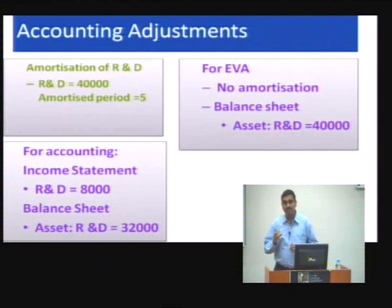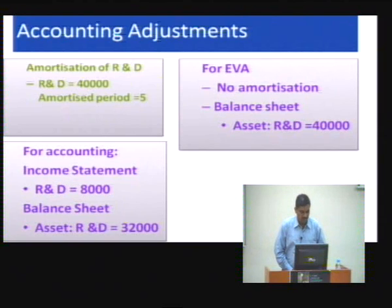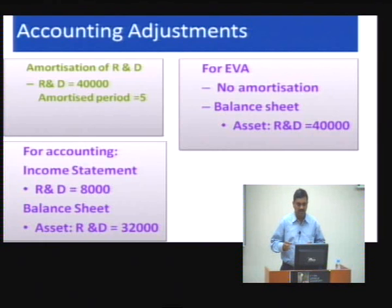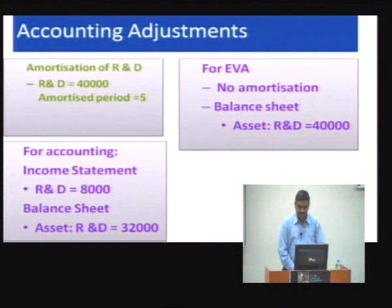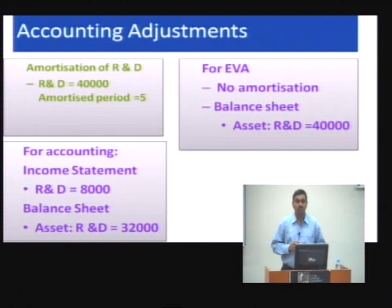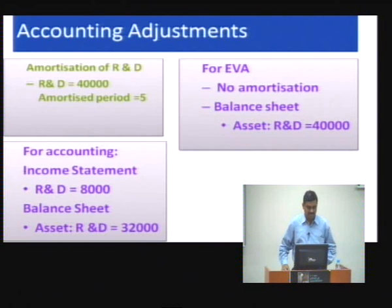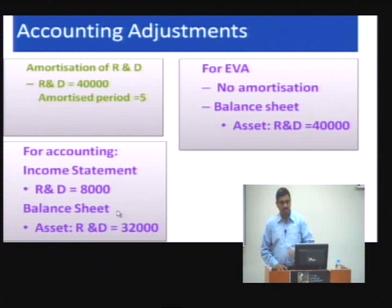Now let us take amortization and R&D. R&D is 40,000 and is amortized over five years. Amortization is an allocation of cost over the life of the asset, so in accounting it is allocated — each year 8,000 is charged and the value of the asset on the balance sheet slowly goes down.